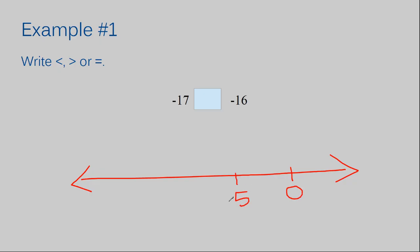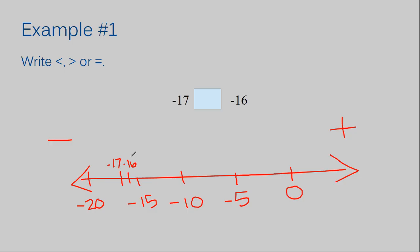Let's say I have zero here, negative five, negative ten, negative fifteen, and negative twenty. My negative 17 is going to be around right here, and my negative 16 is going to be around right here. I've written negative 17 and negative 16 on top just so it doesn't look cluttered. Going to the right on our number line, numbers always get larger. I like to write a plus sign on the right and a minus sign on the left.